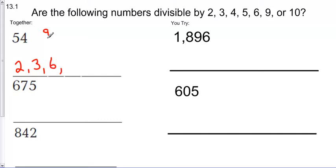Don't worry about 7, don't worry about 8. How about 9? The sum of the digits is divisible by 9. So 54 is divisible by 9. So 54 is divisible by 2, 3, 6, and 9.